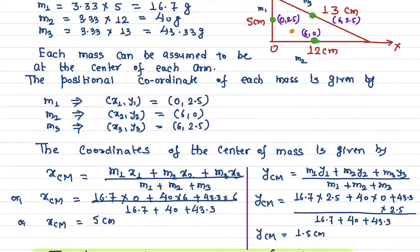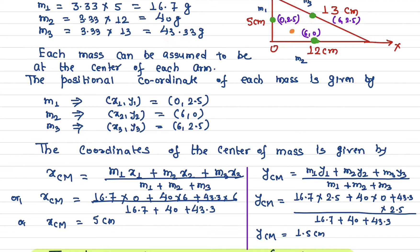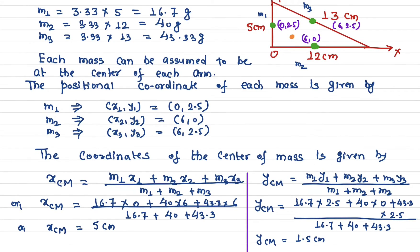Using the same formula for the y-direction: m1·y1 + m2·y2 + m3·y3 divided by the total mass gives the y-location of the center of mass. m1 is 16.7 grams and its y-location is 2.5 centimeters. m2's y-location is zero because it lies along the x-axis. m3 is 43.3 grams with a y-location of 2.5 centimeters. Doing the math gives 1.5 centimeters.